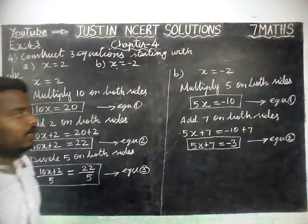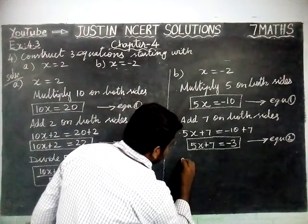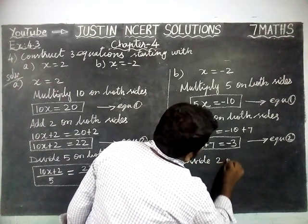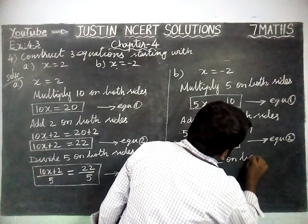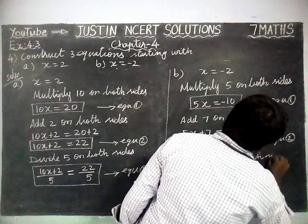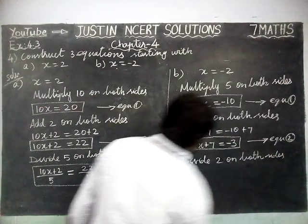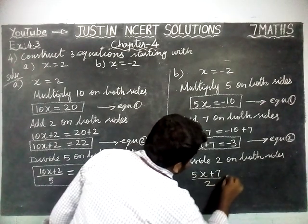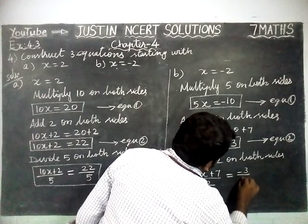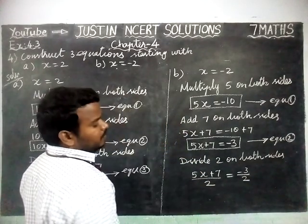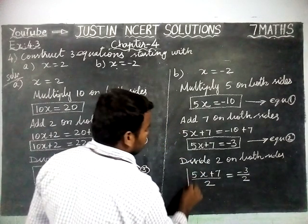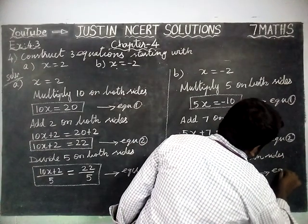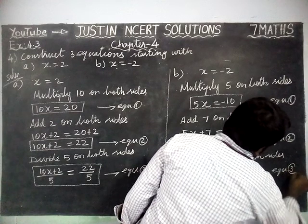Now, we are going to divide 2 on both sides. So, 5x plus 7 divided by 2 is equal to minus 3 divided by 2. If it is possible to simplify, we can simplify. Here, we cannot simplify, so we are stopping here. This is equation 3.